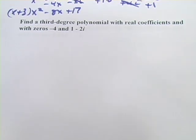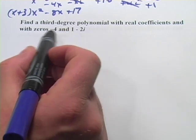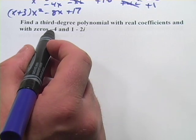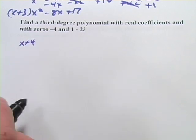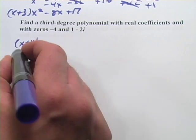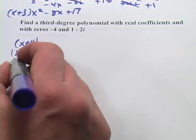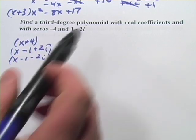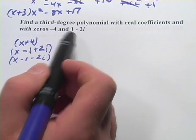Here we want to find the third-degree polynomial with real coefficients and zeros negative 4 and 1 minus 2i. Again, since 1 minus 2i is a root, its conjugate 1 plus 2i must also be a root. For negative 4, the factor is x plus 4. For 1 minus 2i, we get x minus 1 plus 2i, and for 1 plus 2i, we get x minus 1 minus 2i. If you're unsure where those came from, set each root equal to x, then rearrange to set equal to 0.